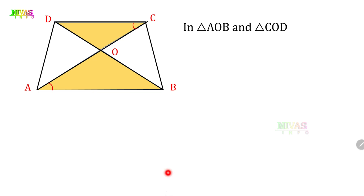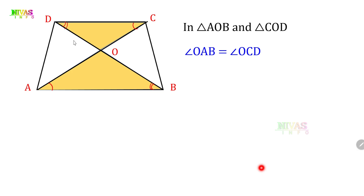This is angle 1. So these two are equal. Angle AOB equals angle OCD. Next, if we use BD as a transversal, we use one angle here and one angle here. These two alternate interior angles are equal. So that means angle OBA equals angle ODC.